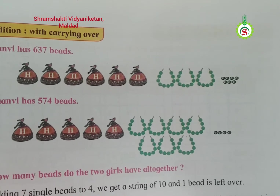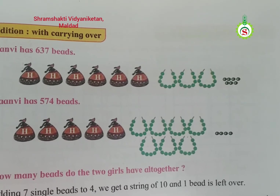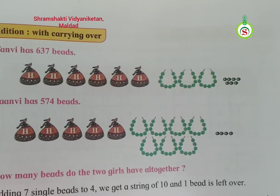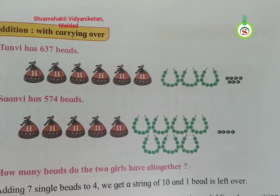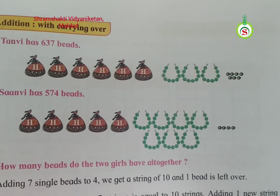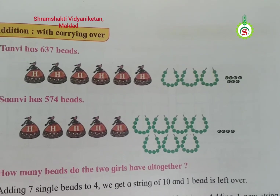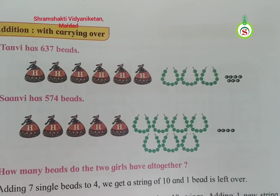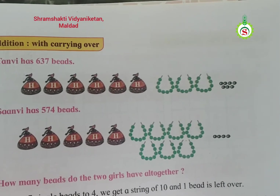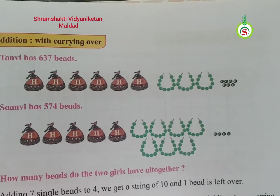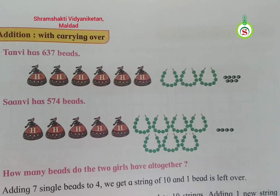1, 2, 3, 4, 5, 6, 7, 8, 9, 10. So in a single string there are 10 beads. And like this, 3 strings are available. Then 7 single beads are given — 7 single beads. Do you understand?